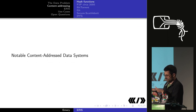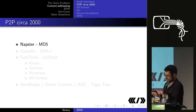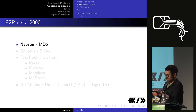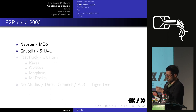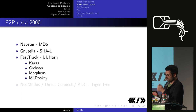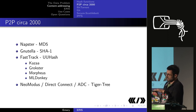What are some existing content-address systems? Back in the 2000s we had many file-sharing options: Napster used MD5, Gnutella used SHA-1, FastTrack used the UU hash — you may remember it as Kazaa or Morpheus — and Neo-Modus Direct Connect used the tiger tree hash.